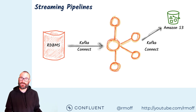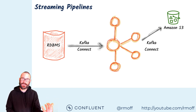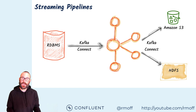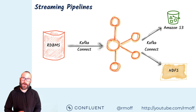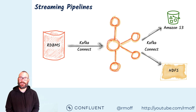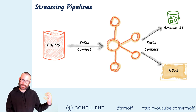Since Kafka stores data, we can use that same data that we've ingested from the database once and write it out to other places. We can take it to S3 in the cloud, we can have it on premises on HDFS — but wherever we want to have that data, it's only coming from the source system once.